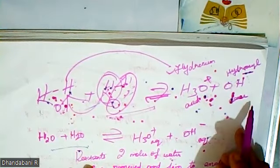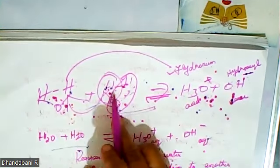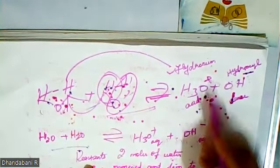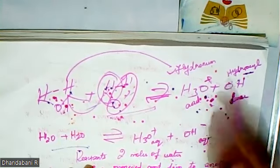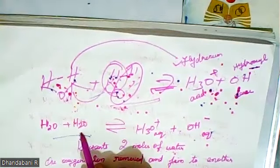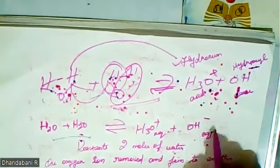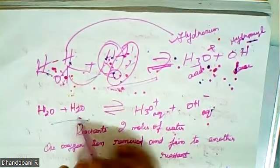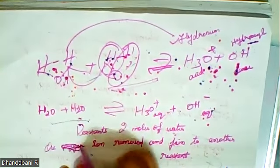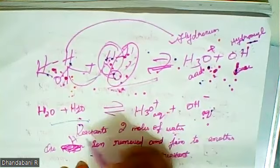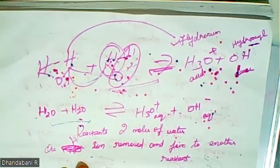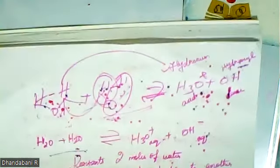H3O+ and OH− are the products. In the backward reaction, 2 water molecules will be formed again. Hydronium is the acid; OH− is the base. One hydrogen ion is removed to join the other reactants. This is the ionization reaction.